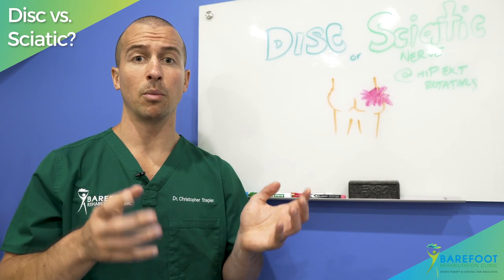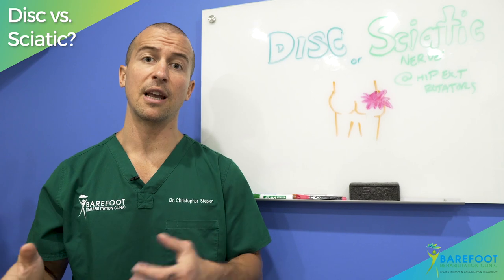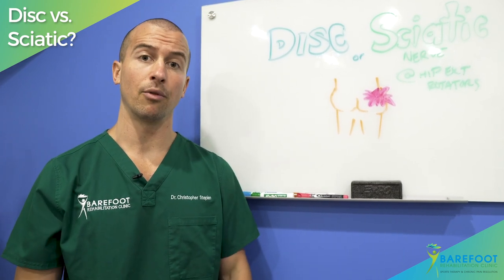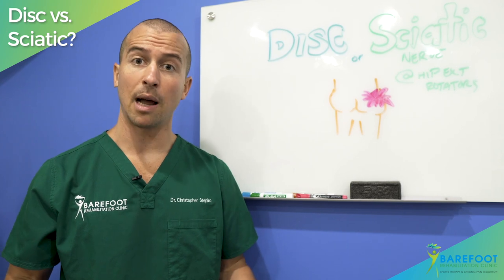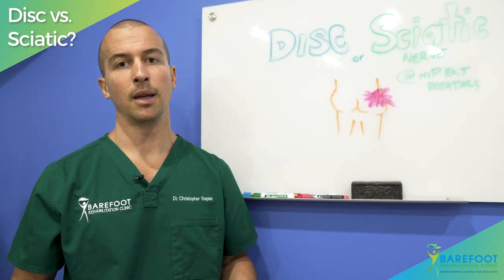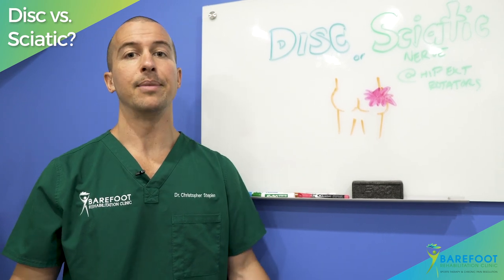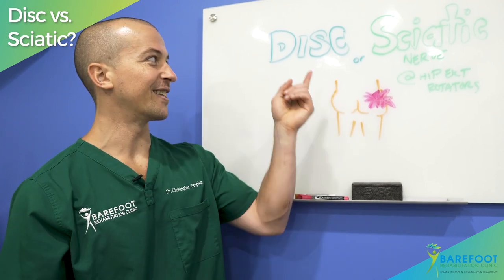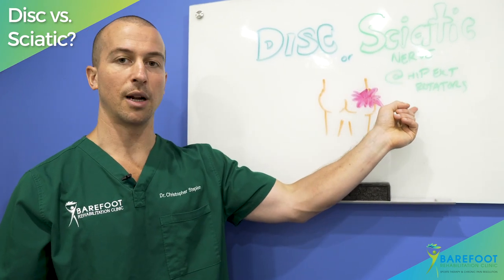Then we start removing adhesion visit by visit. As we remove adhesion in five visits or less, we will know if we're getting permanent relief or not. If it's been five visits and we haven't gotten permanent relief, we're not continuing to waste your time, energy, and money. I'm Dr. Chris with Barefoot Rehab discussing how do you know if it's a disc problem or if it's a sciatic nerve at the hip external rotator problem.